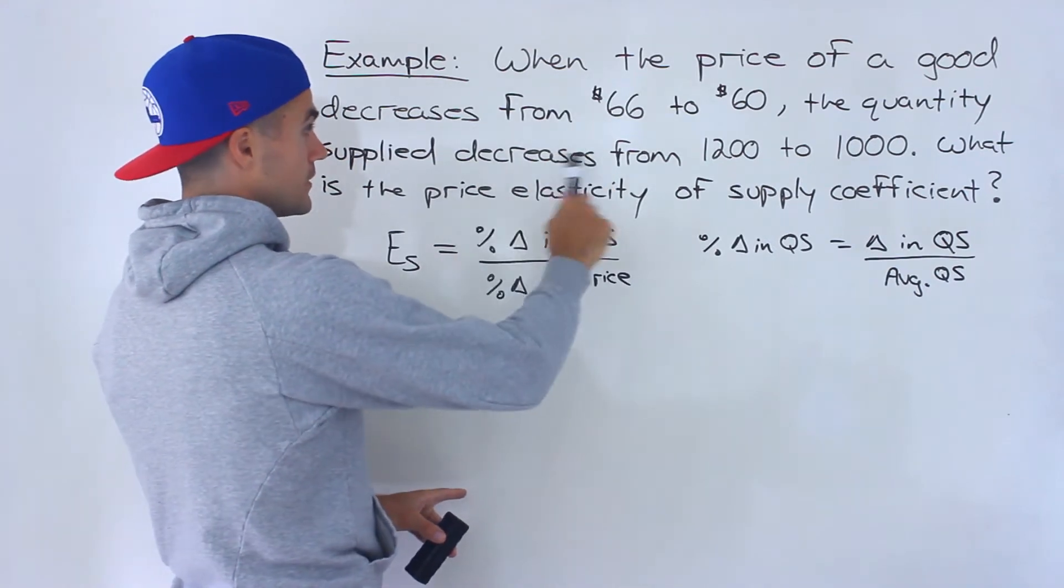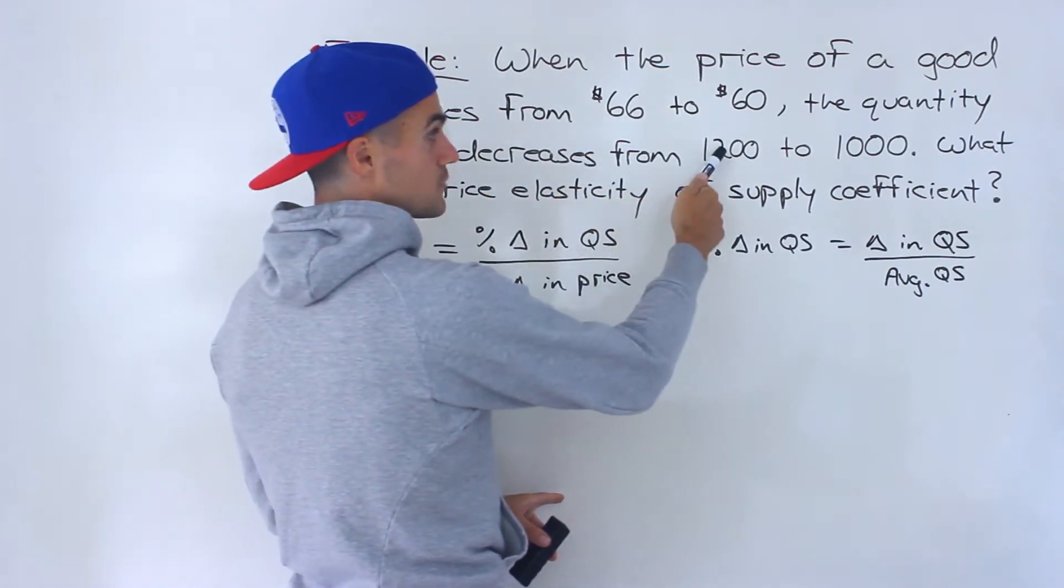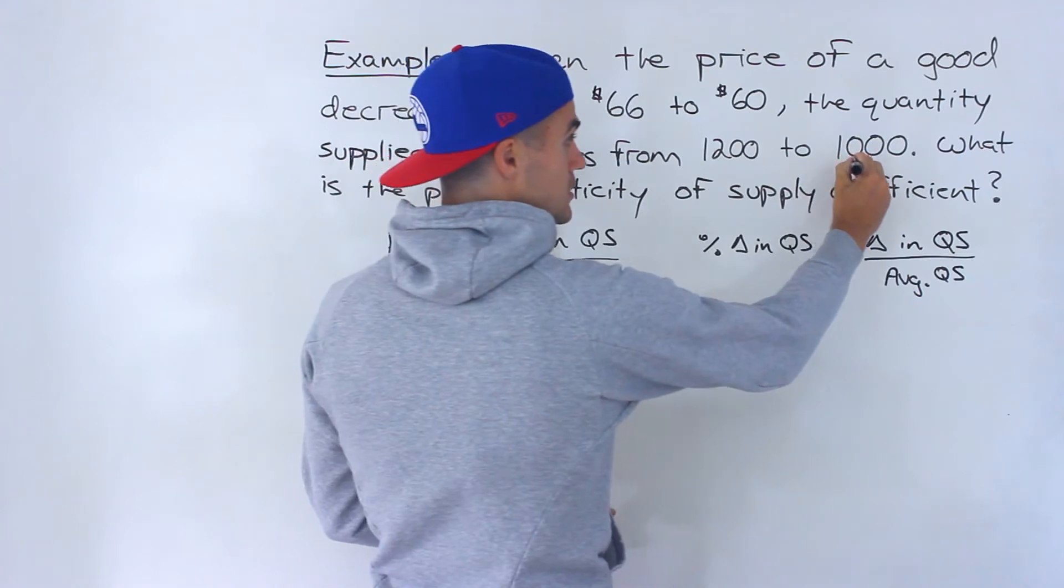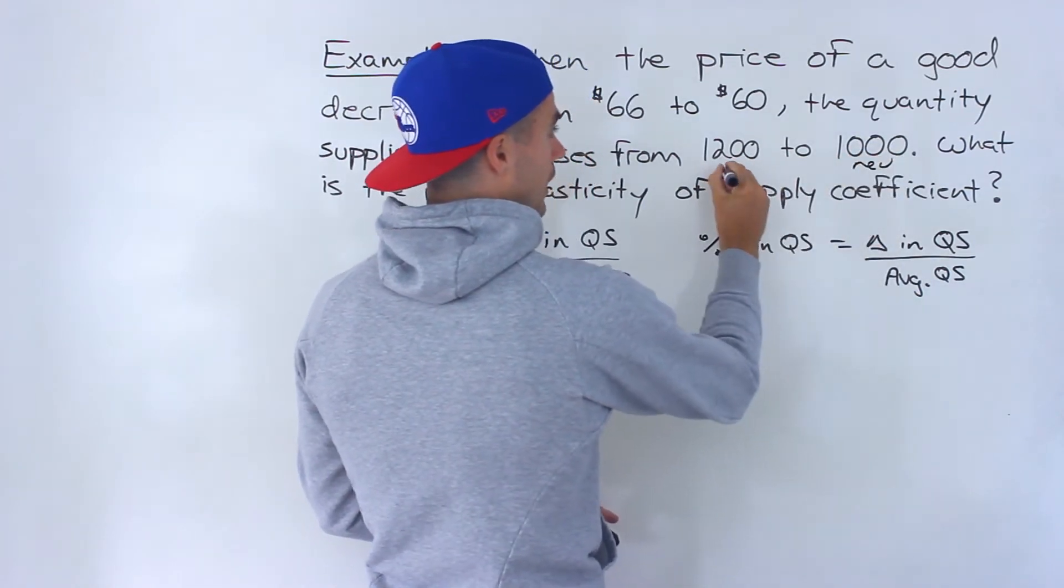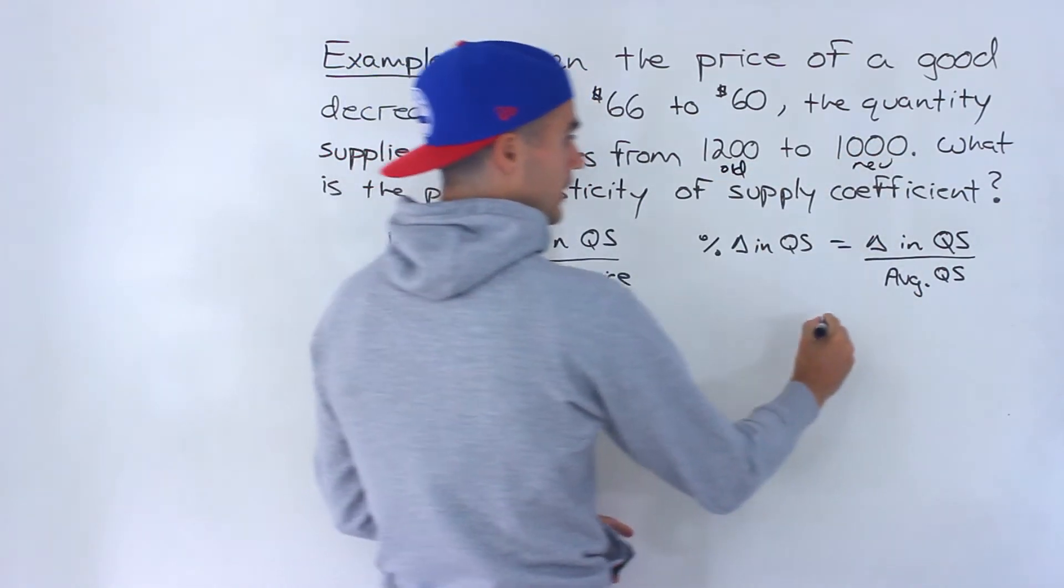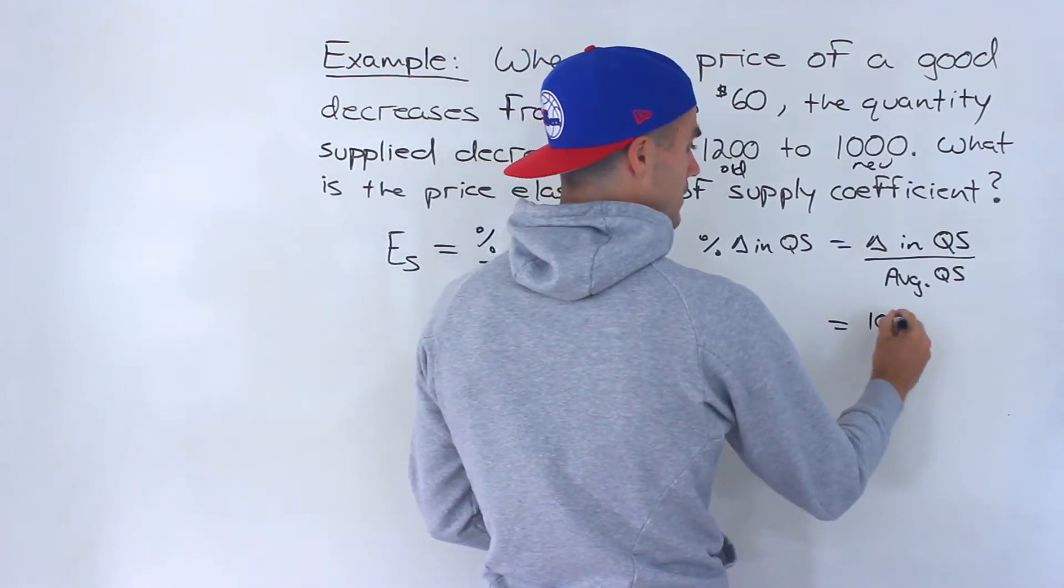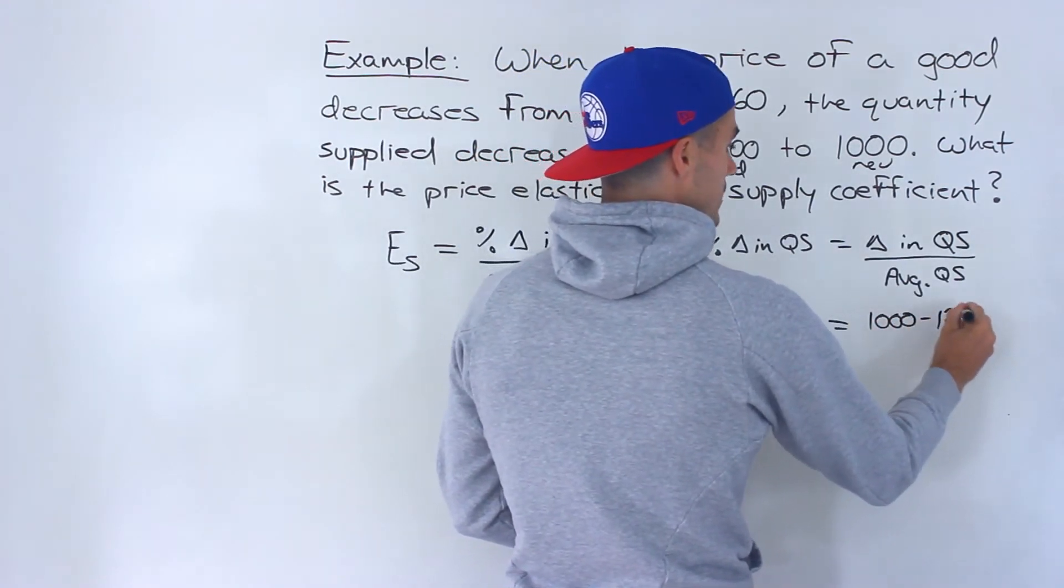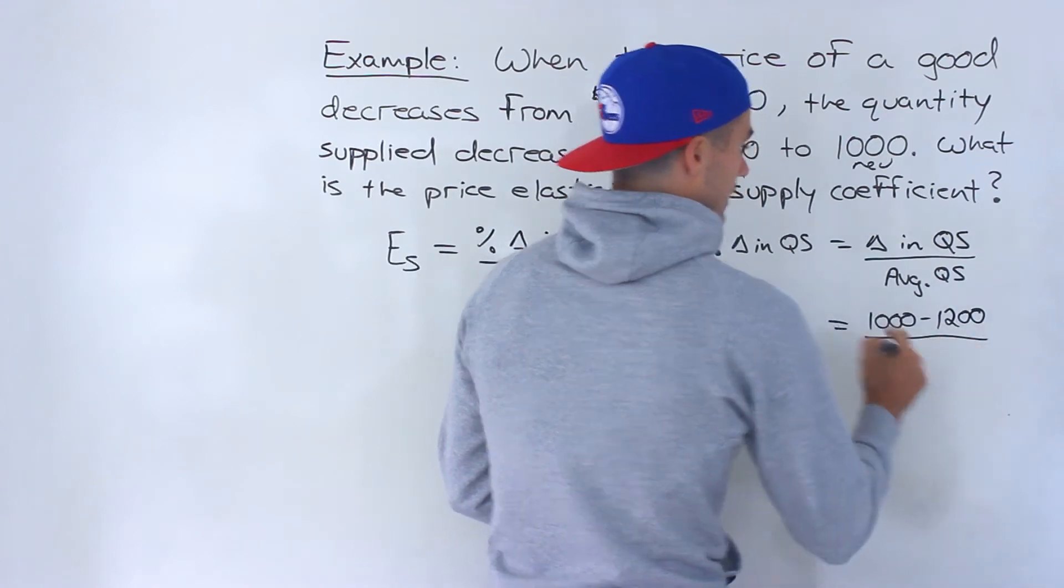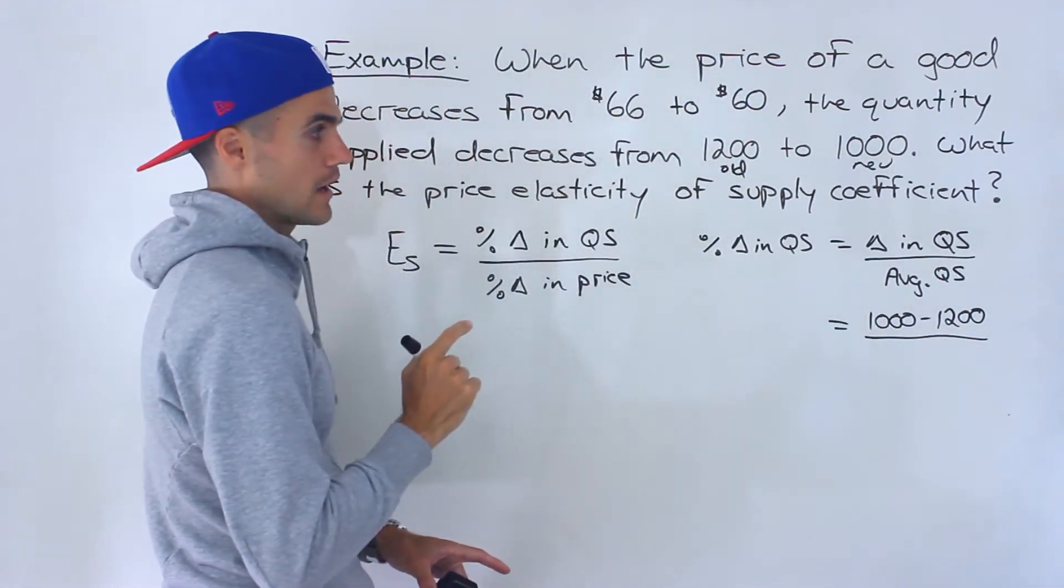So notice the quantity supplied decreased from 1200 to 1000. So this is the new here and this is the old. So the numerator here is going to be 1000 minus 1200. Now what's the average quantity supplied going to be?